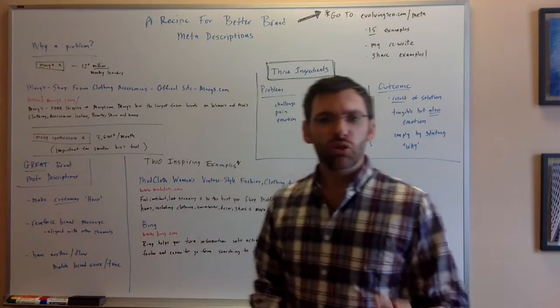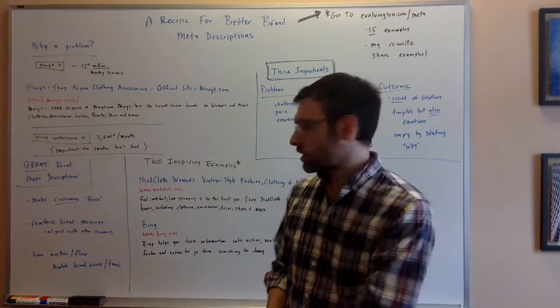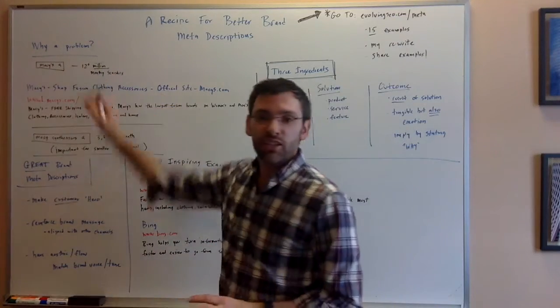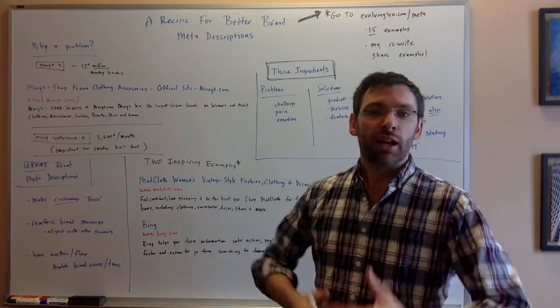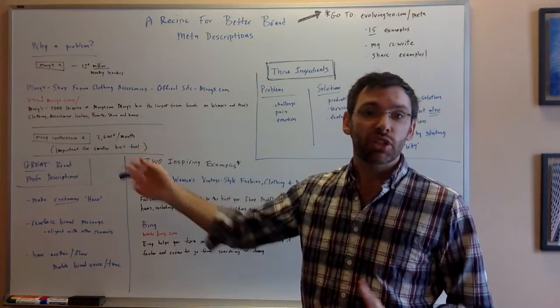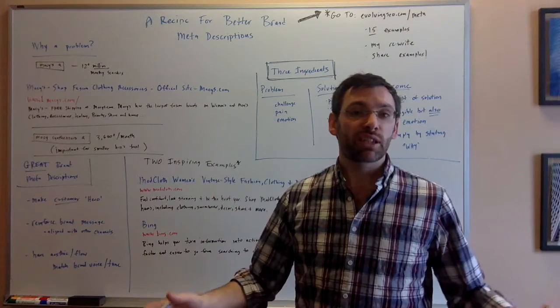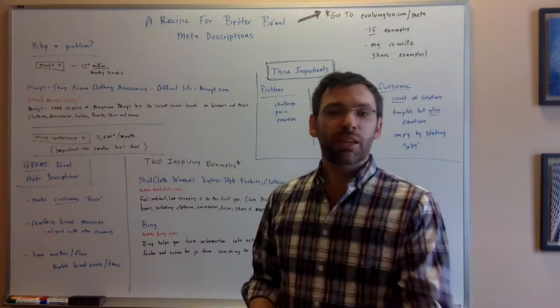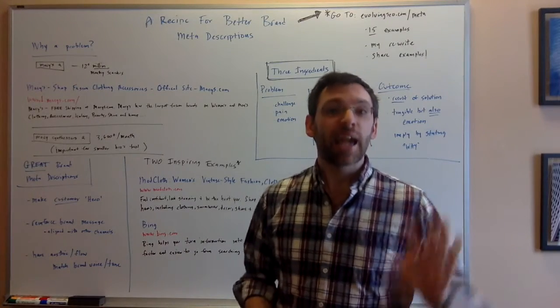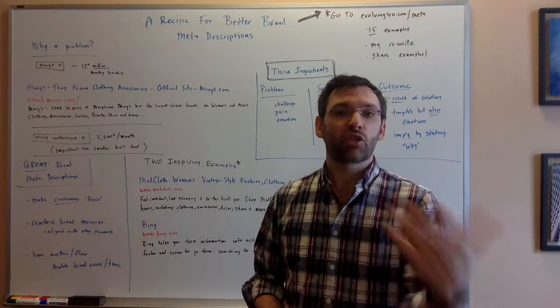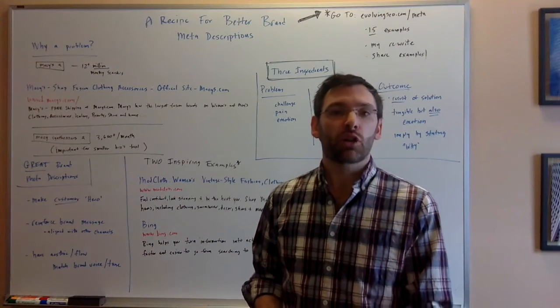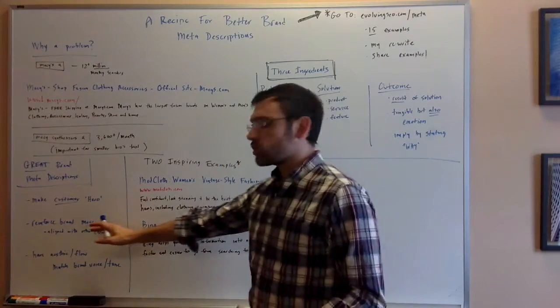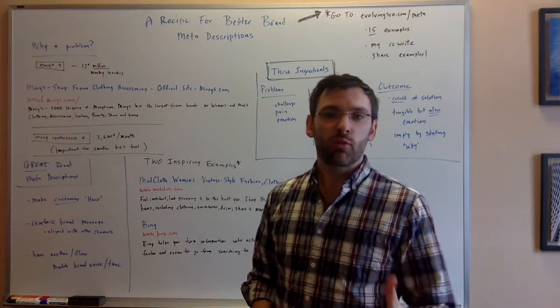Number two, you're using the meta description to reinforce your brand message, to reinforce the things that you're saying out there on other channels. If you're spending, if you're Macy's and you're spending millions of dollars on ads to get millions of people to see it, yet you don't care what 156 characters says in the meta description for your brand name, there's a disconnect there. Because you're spending millions on ads to cast an impression about your brand, yet the meta description, an easy fix, it goes ignored.